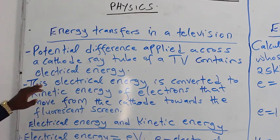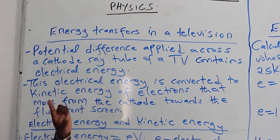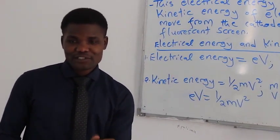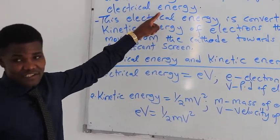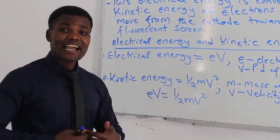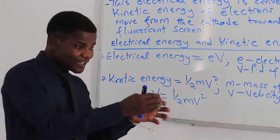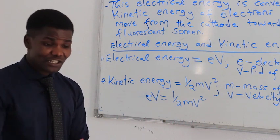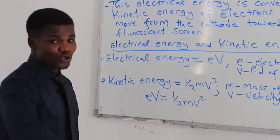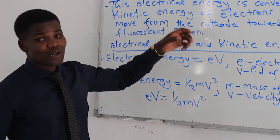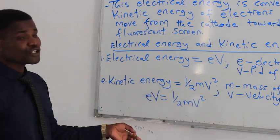The potential difference applied across a cathode ray tube of a TV contains electrical energy. You connect your television to a socket or battery so it is supplied with voltage, which carries electrical energy. Once that electrical energy hits the cathode of the tube, the electrons are excited and gain kinetic energy — they start moving. So the electrical energy from the source is converted to kinetic energy in the form of movement of electrons from the cathode towards the fluorescent screen.